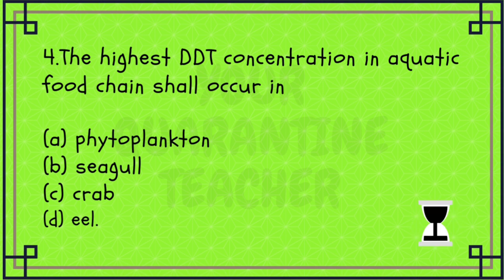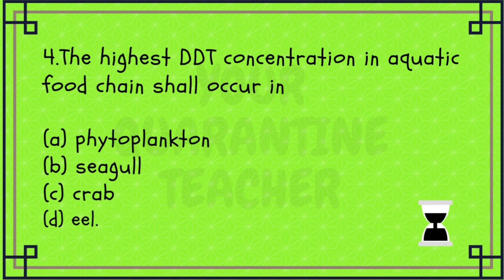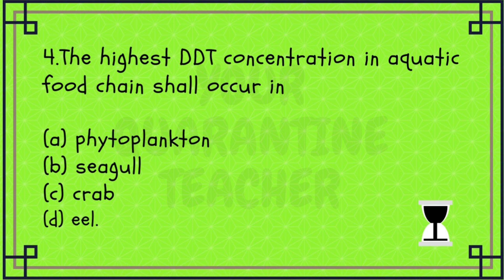It is one of the trophic levels. Higher trophic level is the 4th. If you have a concentration of DDT at the top of the food chain, because it is non-biodegradable, at a higher trophic level, DDT accumulates more. This process is called Biomagnification, Bioamplification, or Bioconcentration.